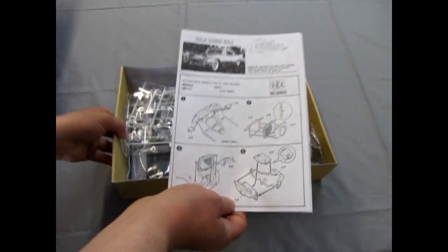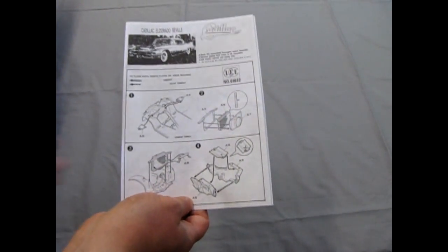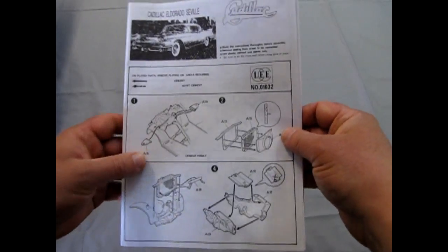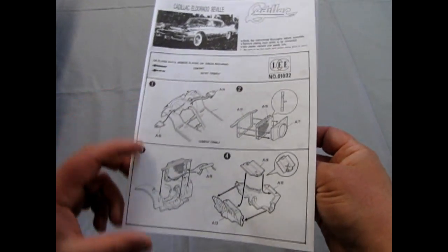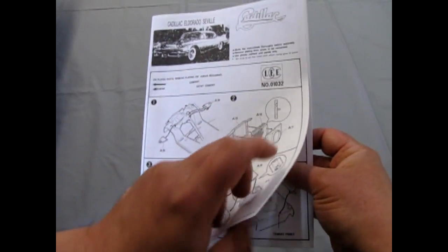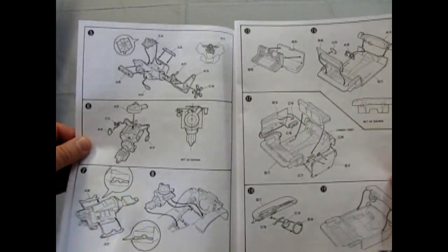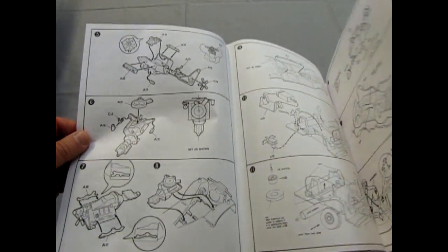Then we start off with this very interesting instruction sheet here. A little bit of a bad photocopy of the front of the box but it shows all the bits and components going in. You get that nice Cadillac V8 engine there.